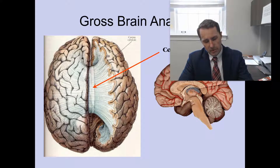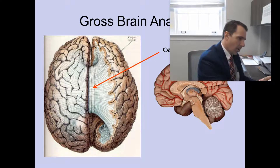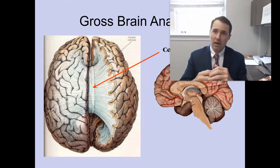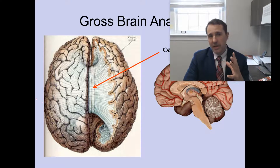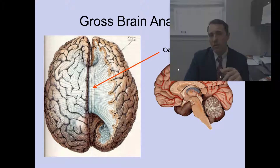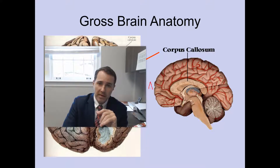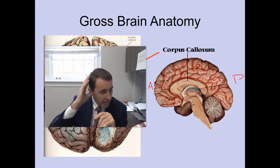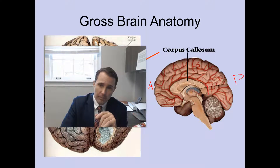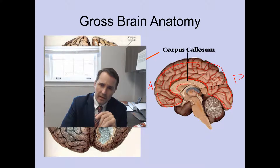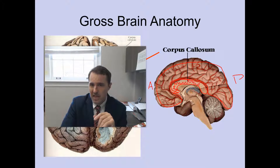Beneath the cerebral hemispheres, there is a large band of neurons that connect the left and the right hemispheres — this is known as the corpus callosum. If we look at a sagittal slice of the brain, this is anterior, this is posterior, and this would be the right cerebral hemisphere. Here you can see where the corpus callosum is located sagittally, beneath the right cerebral hemisphere.